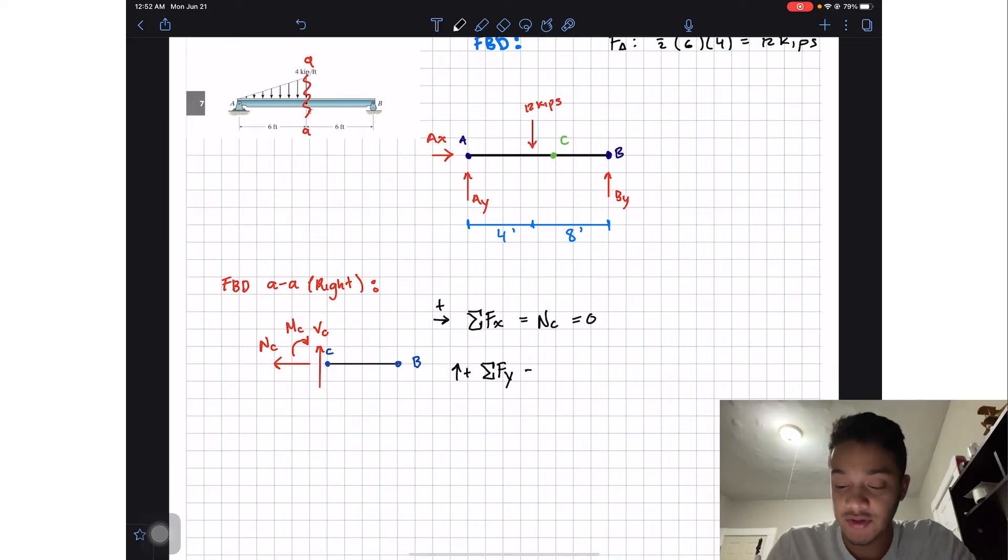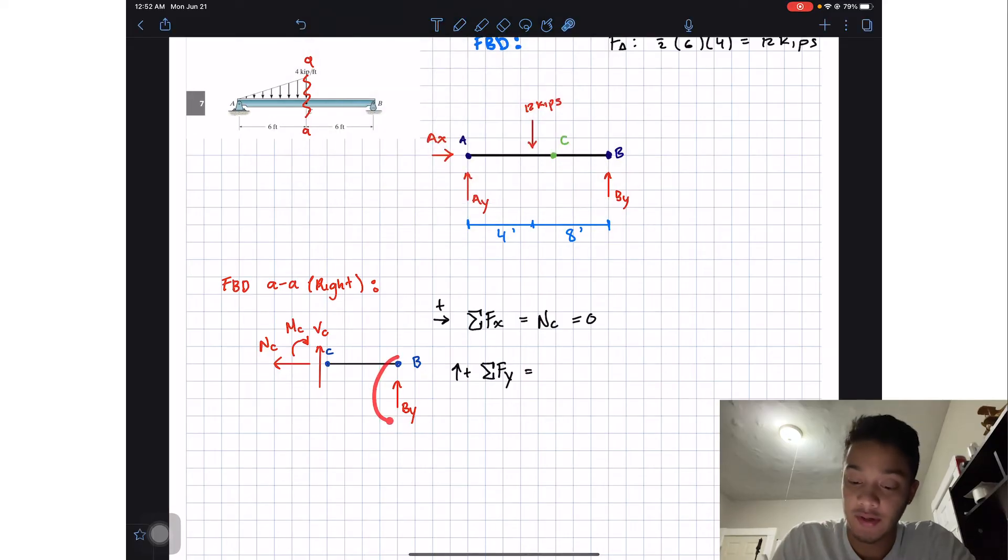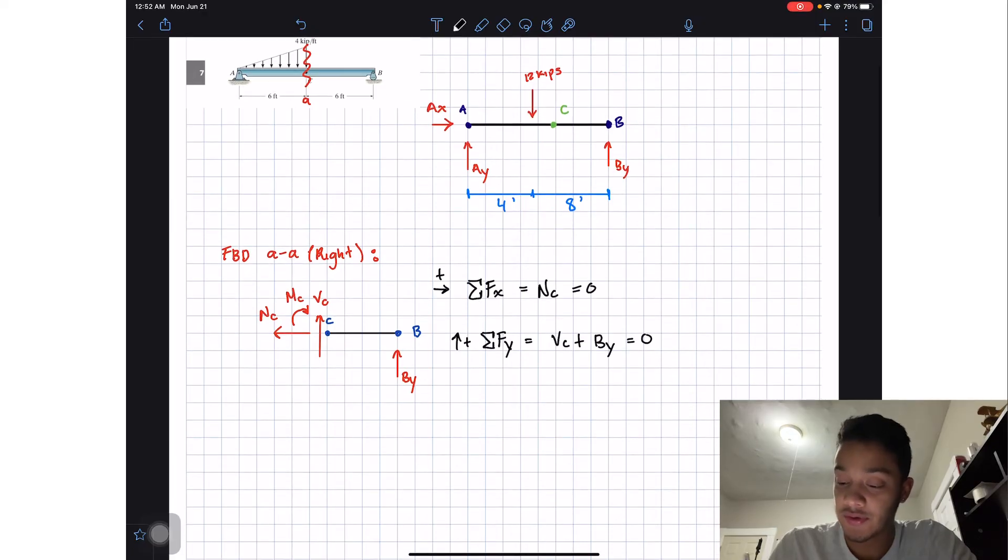Next if we assume going up is positive and apply the sum of forces in the y direction, we will have positive Vc and positive By, and all this should be equal to zero. So if we solve for Vc, this should be equal to negative By.